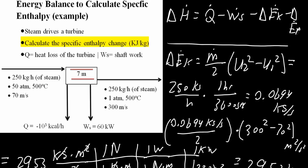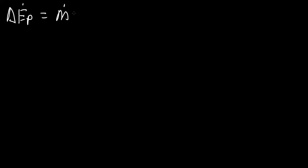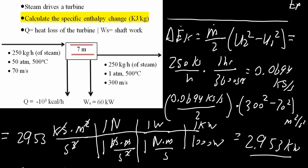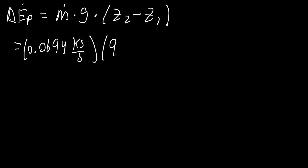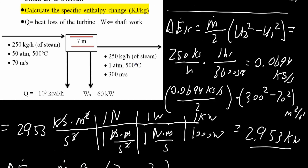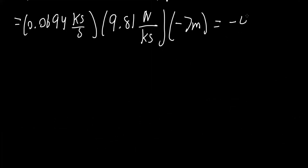Next, we will calculate potential energy. The change in potential energy formula is: mass flow rate times gravity times the change in height, where Z represents height. So the mass flow rate was 0.0694 kilograms per second, times our gravity of 9.81 newtons per kilogram — or equivalently meters per second squared — times the change in height. For us, it was negative 7 meters, because the height decreases by 7. This equals negative 4.766 newton times meter divided by second.